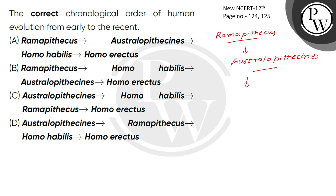After this, Australopithecus came. What did you see in Australopithecus? They were African ape-men. They used stones as weapons, were hunters, had a cranial capacity of 600cc, were eating fruit, had bipedal locomotion, more man-like teeth, and had a lumbar curve.